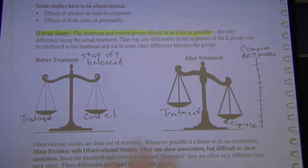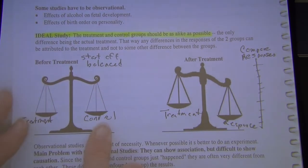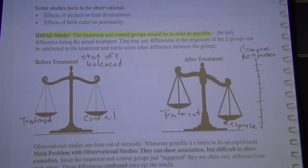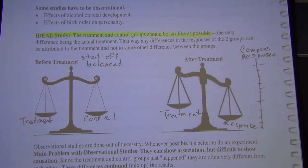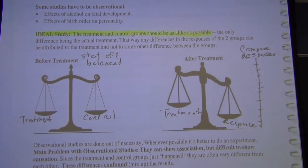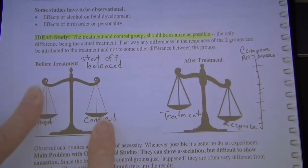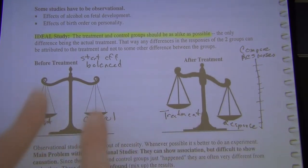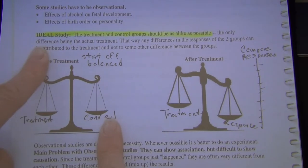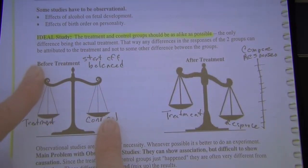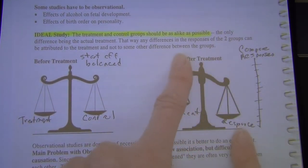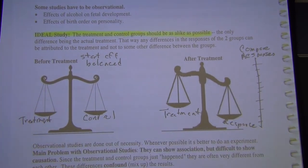In observational studies, when people choose to smoke or use drugs, they might also be making other unhealthy choices. It's very hard to separate the effect of what we're studying from those other causes. If the groups start off unbalanced, the results are very confusing — you just don't know what happened.